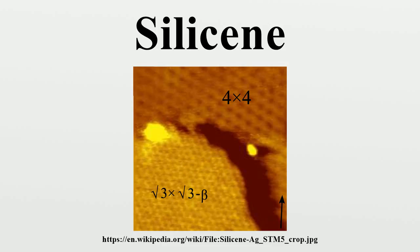It is believed that the substrate silicene is made on has a substantial effect on its electronic properties. Unlike carbon atoms in graphene, silicon atoms tend to adopt sp3 hybridization over sp2 in silicene.